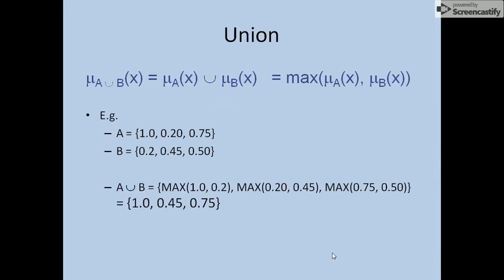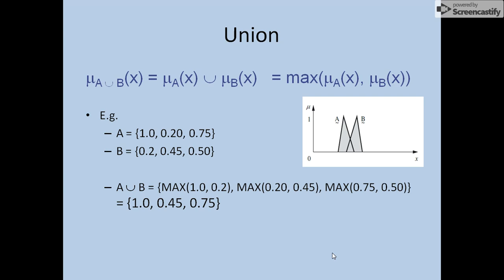The first fuzzy operation is union. In union, if we have two different sets A and B, we take the membership value of the first element of set A and the first membership value of set B — say 1.0 and 0.2 respectively. What we get is the maximum value of them. So the maximum of 1.0 and 0.2 is 1, and that will be the result.